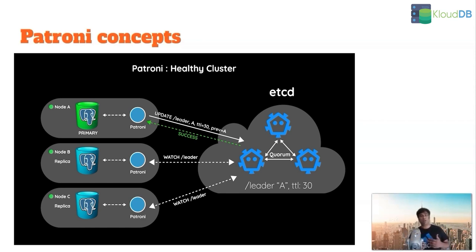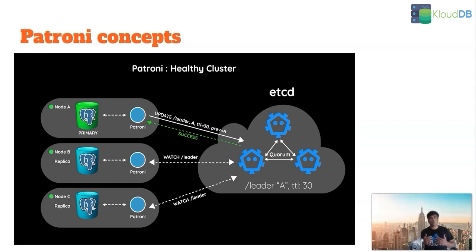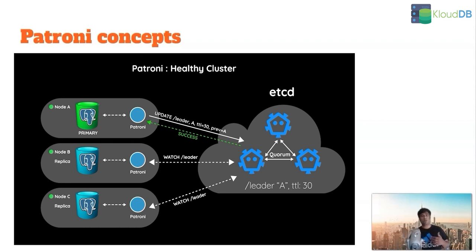In a healthy cluster, node A is updating its leader key every 10 seconds, or whatever the loop wait is set to, and then node B and node C are replicas watching the leader key.